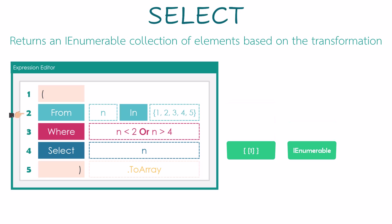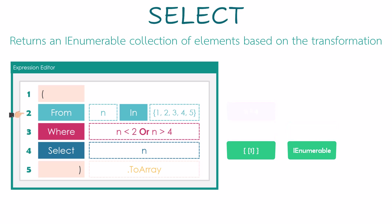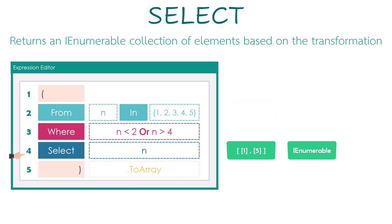We go back and get the next numbers — 3 and 4 are also not smaller than 2 or greater than 4, so we don't select them. Then we take the last number, 5. Since 5 is greater than 4, we move on to the select operator and store it in the IEnumerable collection. The loop is done. The result variable contains only two numbers: 1 and 5.